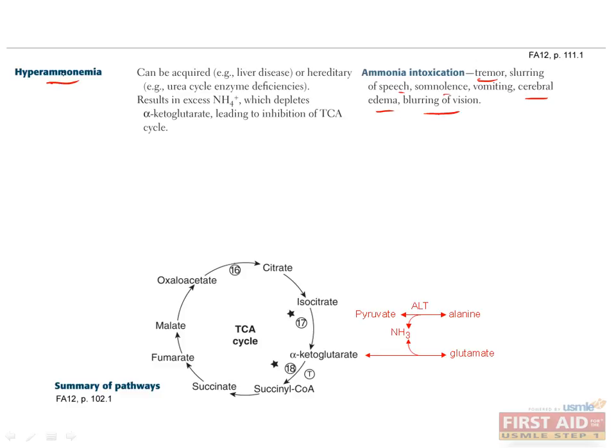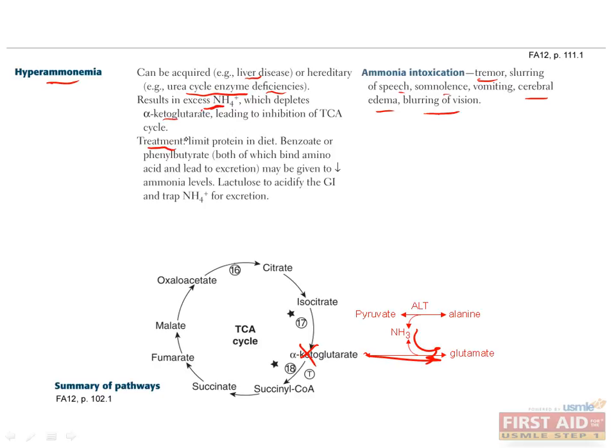Hyperammonemia can be caused by liver disease, since that's where ammonia is broken down into urea, or can be caused by a genetic deficiency in a urea cycle enzyme, which prevents the urea cycle from working properly. In either case, ammonia will build up and will be transferred to alpha-ketoglutarate, which causes it to form glutamate and therefore takes it out of the TCA cycle.